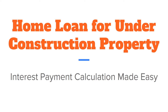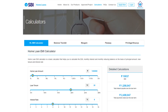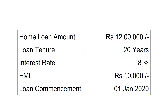Let us try to understand how interest payment calculation is done in the case of a home loan for an under-construction property. In case of under-construction property, the builder demands costs in certain installments and as per their raised demand, the bank releases the amount directly to them. For our example: home loan amount is rupees 12 lakhs, tenure is 20 years, and interest rate is 8%. Your EMI will come to around rupees 10,000.